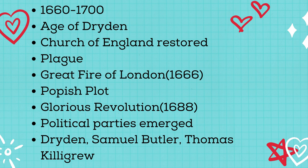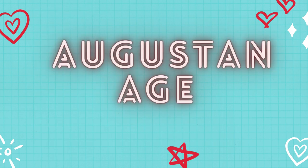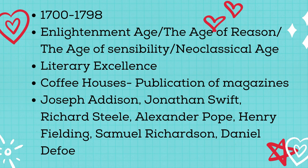Two political parties, the Whigs and the Tories, emerged. The Whigs, also called the liberals, wanted to exclude James from inheritance, and the Tories, also called the conservatives, supported James' accession. The famous writers during the Restoration Age are John Dryden, Samuel Butler, and Thomas Killigrew. Next comes the Augustan Age, with a timeline from 1700 to 1798.